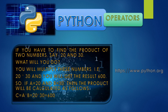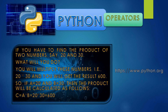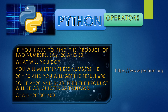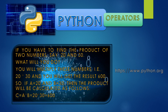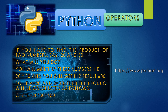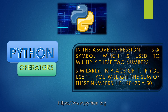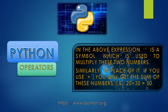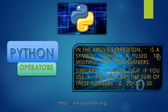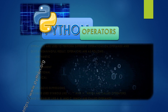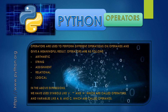If you have to find the product of two numbers, say 20 and 30, you will multiply these numbers — 20 x 30 — and you will get the result 600. So if A is 20 and B is 30, the product will be calculated as C = A * B = 20 * 30 = 600. Simply for performing calculations, we use some kind of symbols. The star symbol is used to multiply two numbers. Similarly, if you use plus, you will get the sum — 20 + 30 = 50. Operators are used to perform different operations on operands and give a meaningful result.